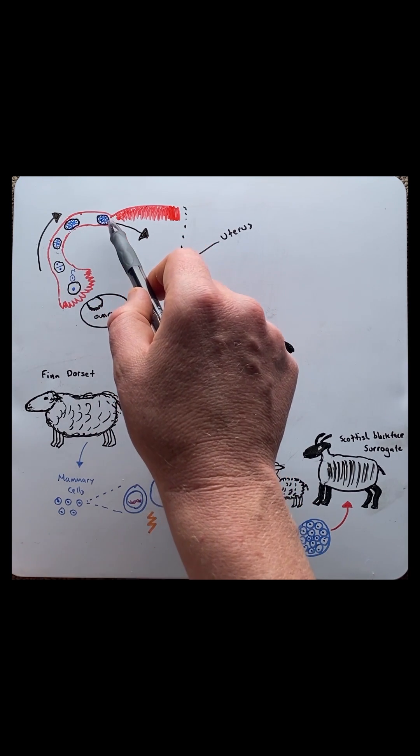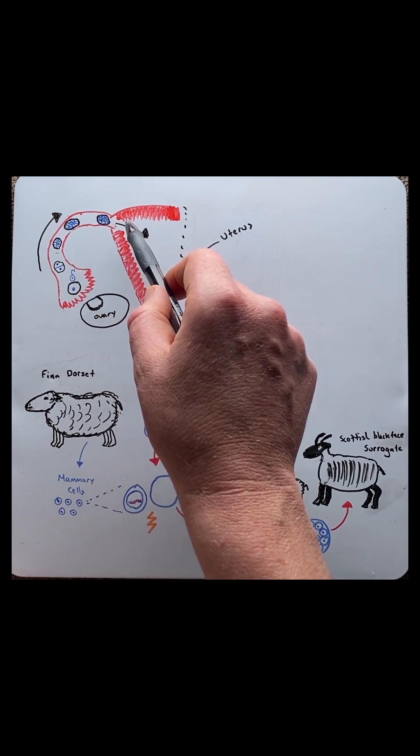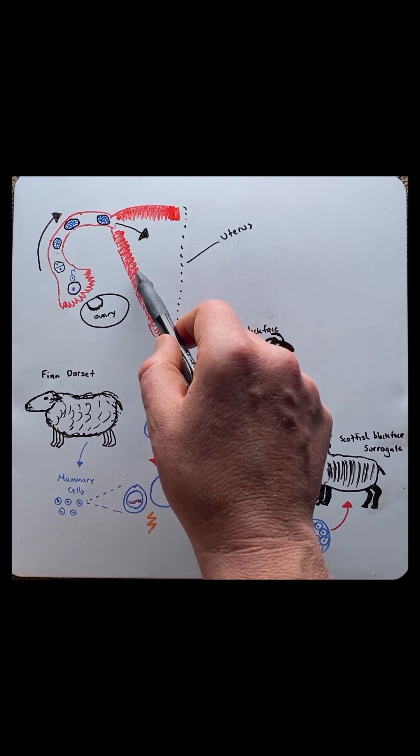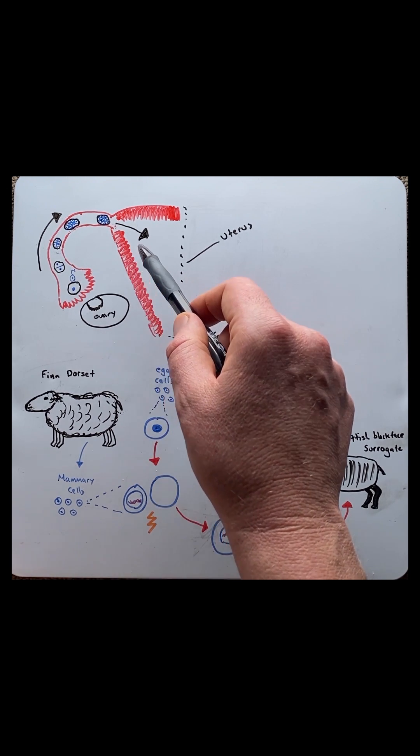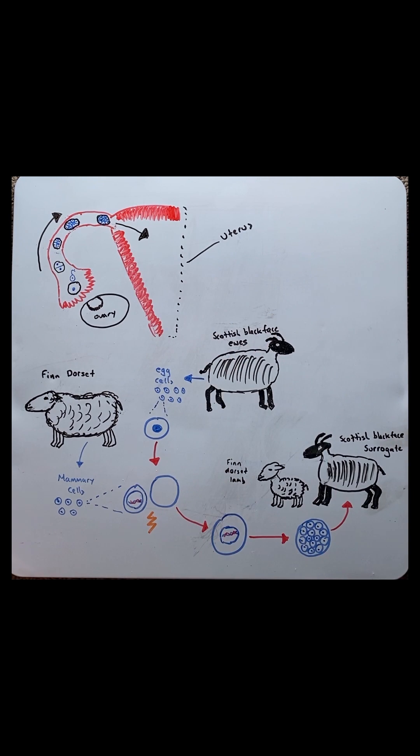At about day five we have a blastocyst which contains about 50 to 200 cells. From here it will then enter the uterus, embed into the endometrium, start to proceed through embryogenesis, and then nine months later we have a newborn baby.